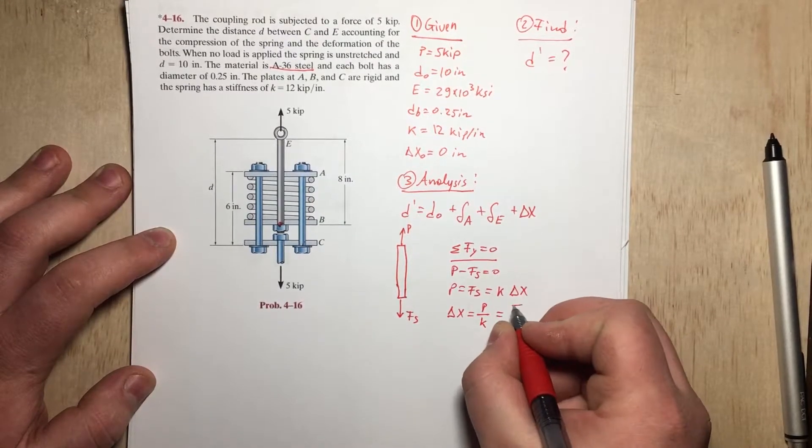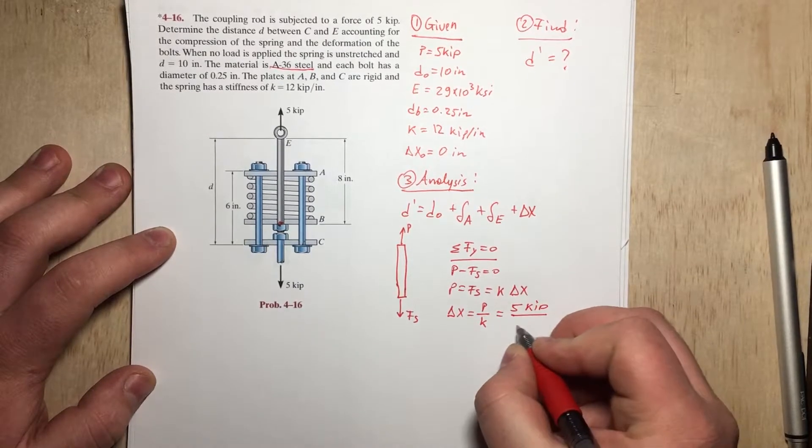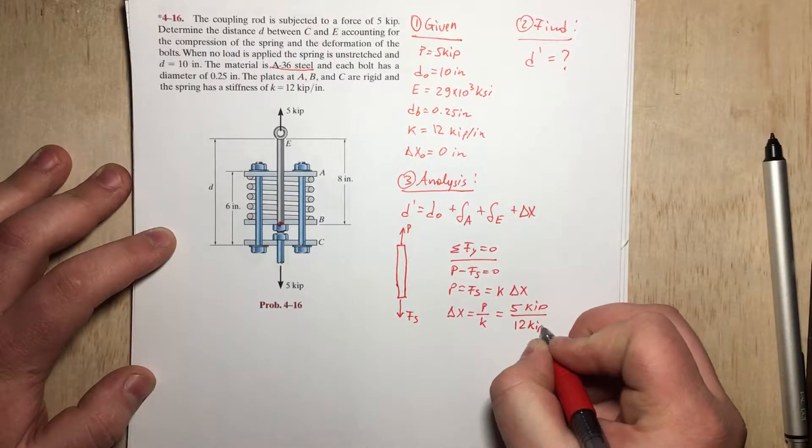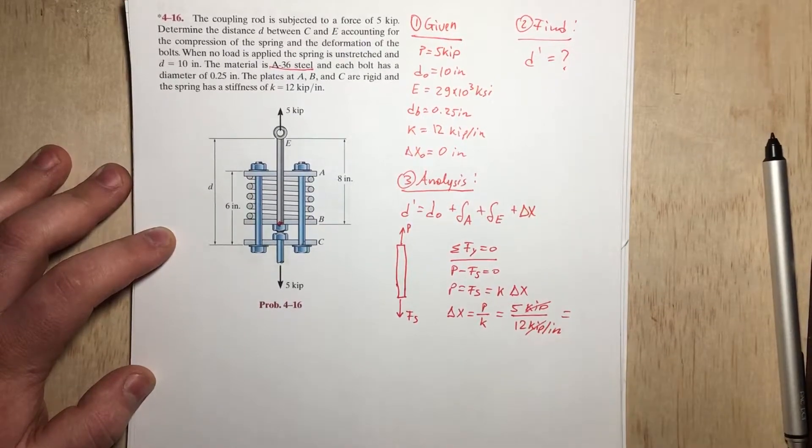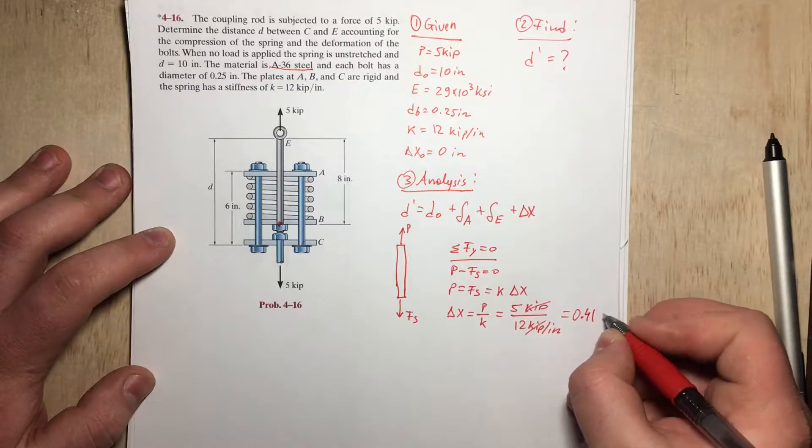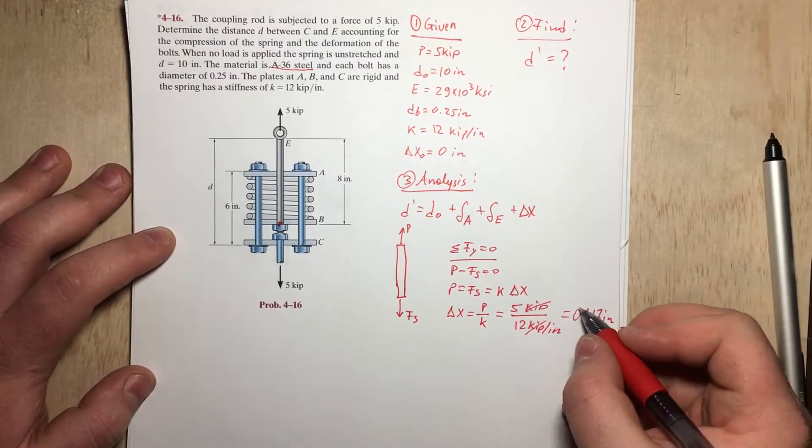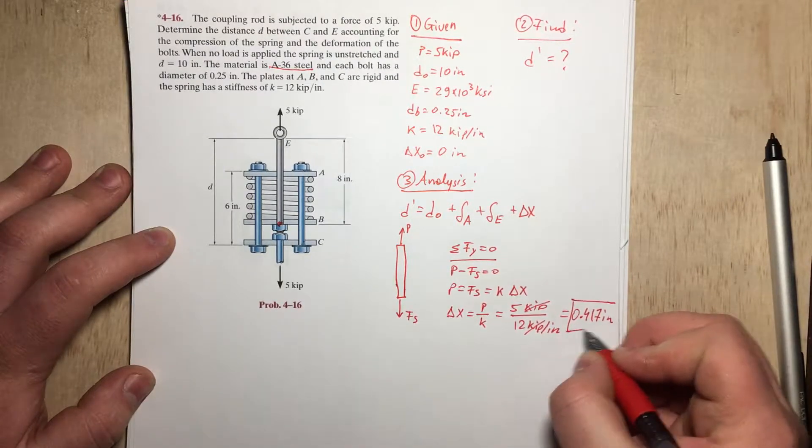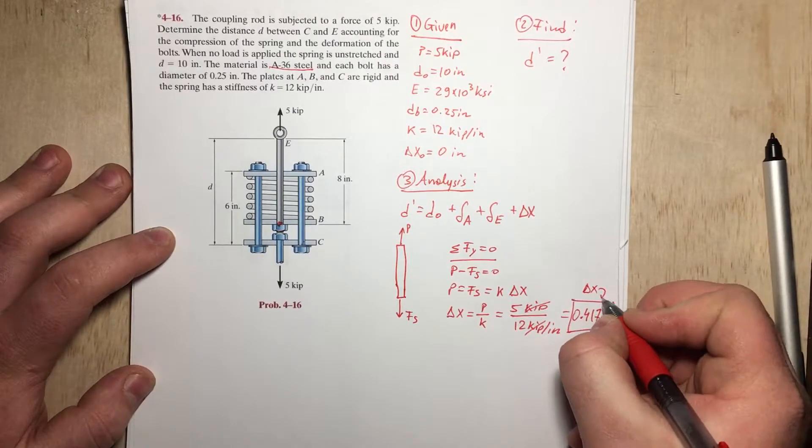And P is 5 kip, and K is 12 kip per inch. Kip will cancel out, and we're left with inches, and that should be 0.417 inches. So now we know delta X.